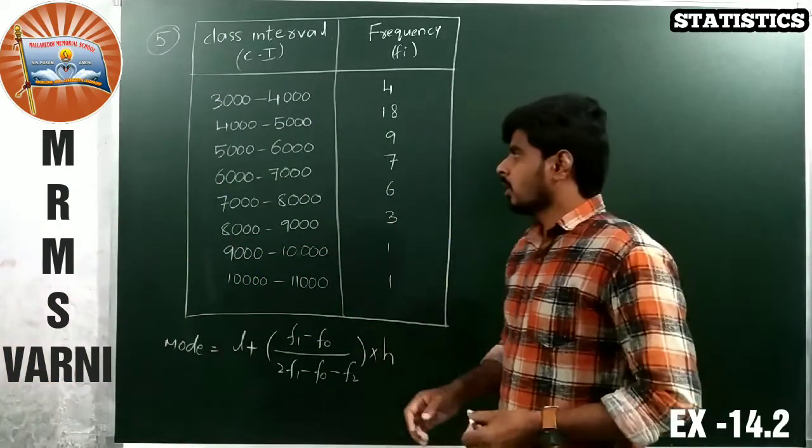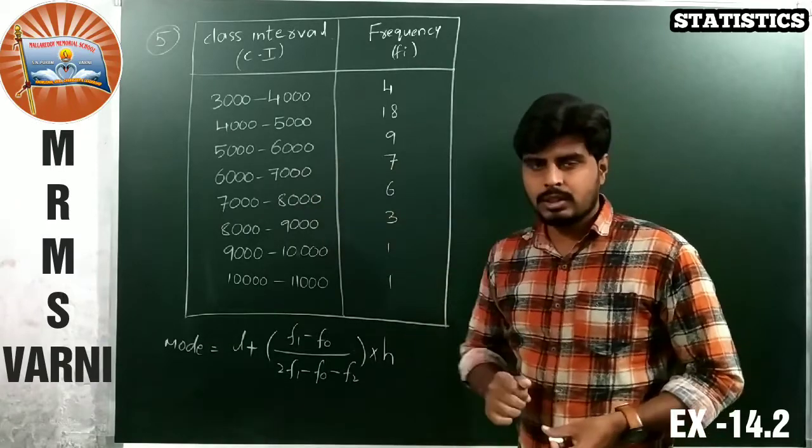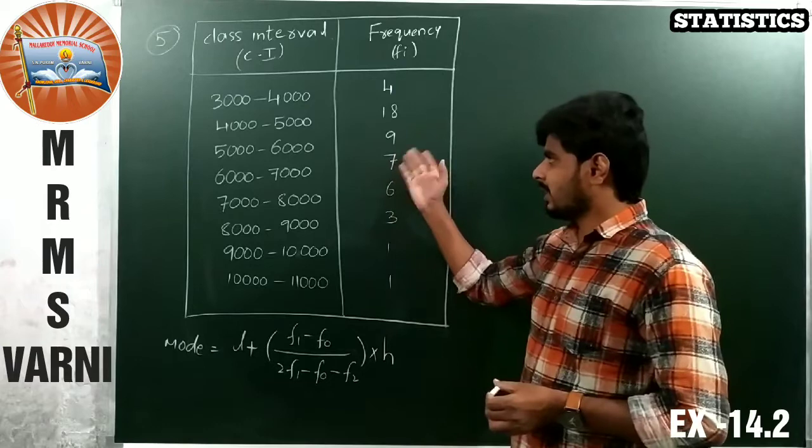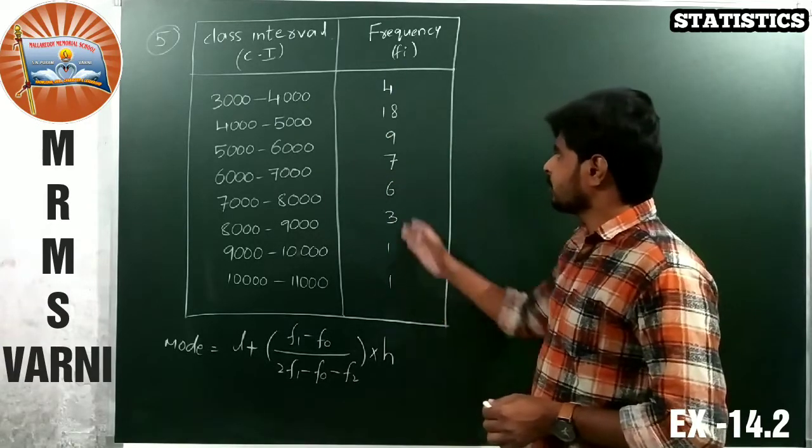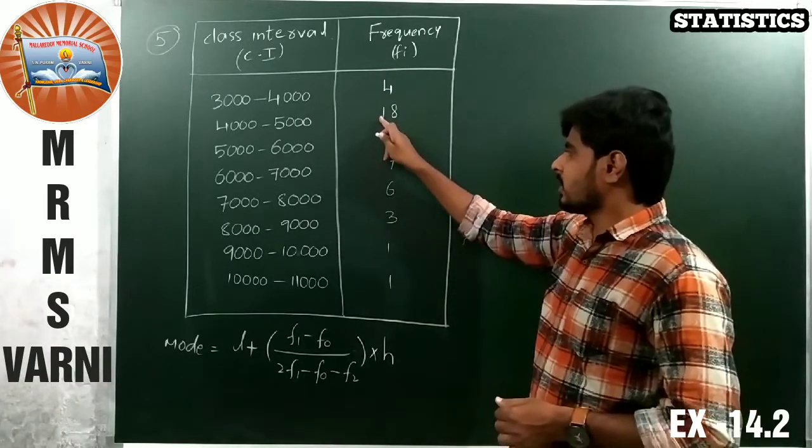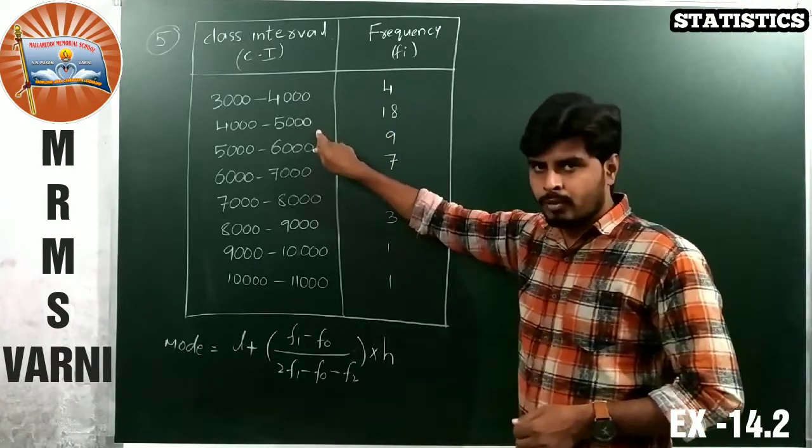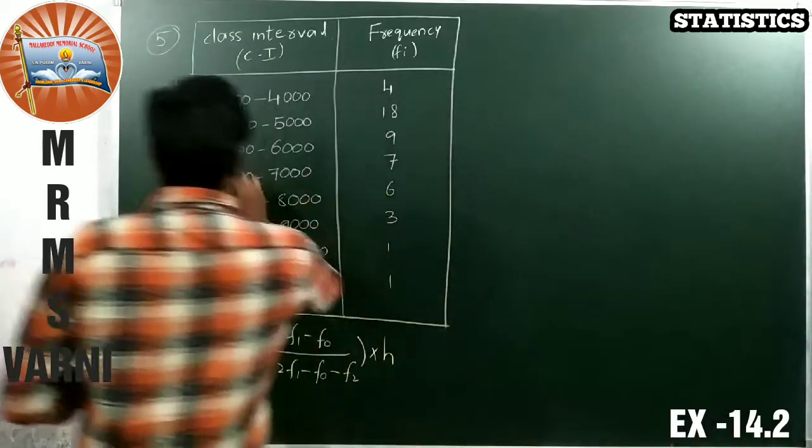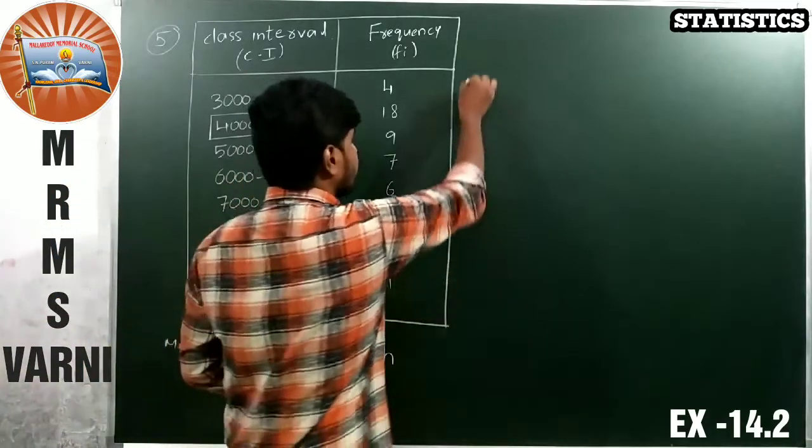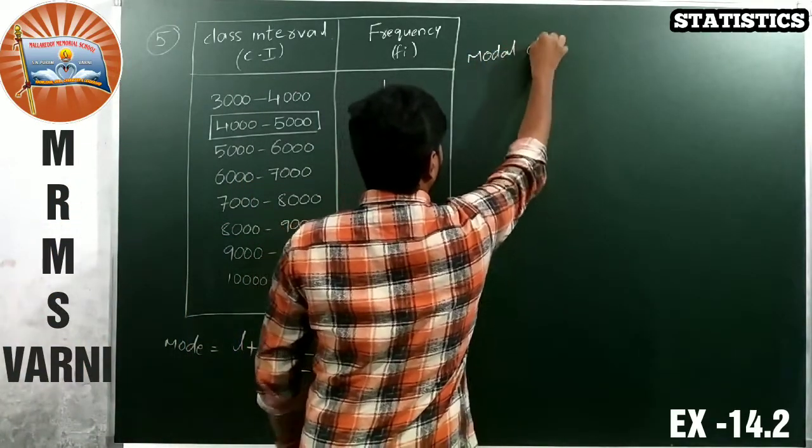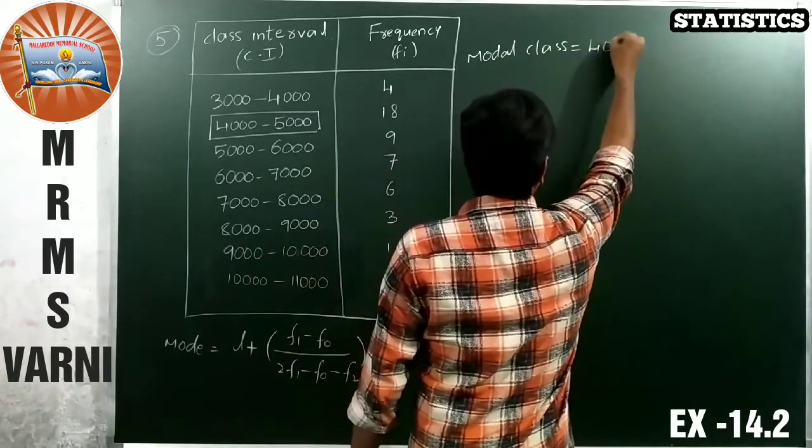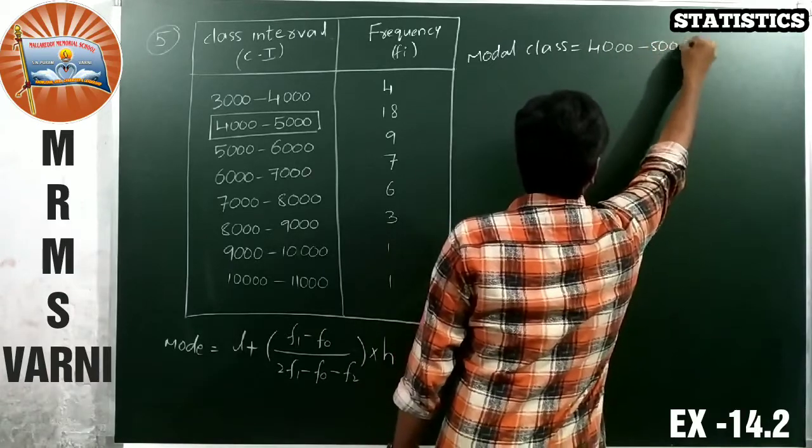So what we do now? We have to choose modal class first. How we choose the modal class? By taking the highest frequency class interval. What is the highest frequency here? 18 is the highest frequency. Now the class interval of 18 is 4000 to 5000, so this is our modal class.